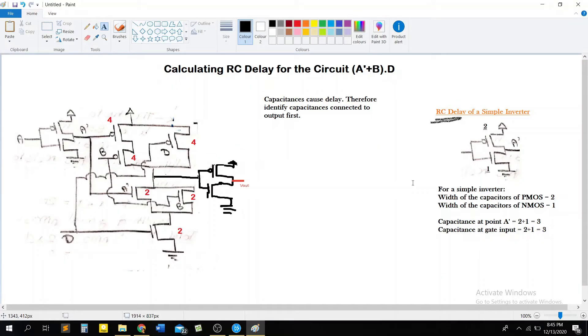So we already calculated the width of every transistor in our circuit and now all that's left to do is calculate the total RC delay. Right. So before we can move on to our main circuit, which as you can see I've pasted here, we need to talk a little about the RC delay of a simple inverter. So there's not much for you to understand here. We already know that the general width of a PMOS is 2 and the general width of an NMOS is 1. So for any simple inverter, CMOS inverter, the width of the capacitor of PMOS is going to be 2 and the width of the capacitor of the NMOS is going to be 1.